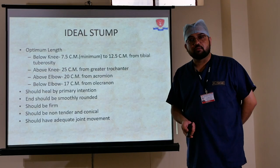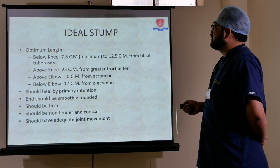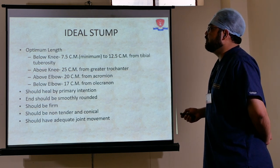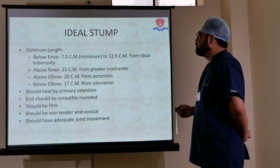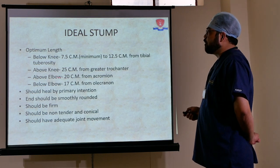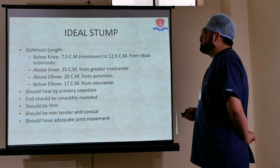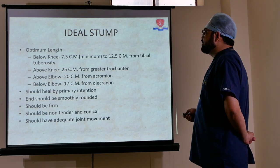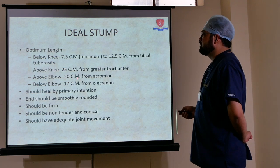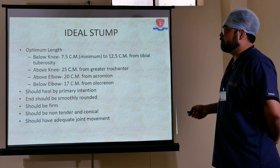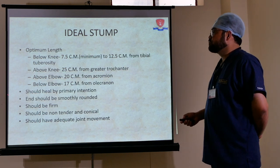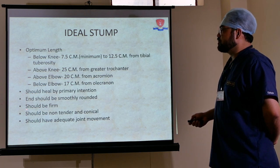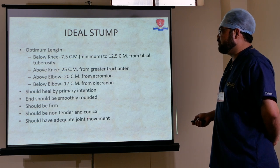The ideal stump criteria: first, the stump should be of optimum length. Below knee: 7.5 cm minimum to 12.5 cm from tibial tuberosity. Above knee: 25 cm from the greater trochanter. Above elbow: 20 cm from the acromion process. Below elbow: 17 cm from the acromion. Second, it should heal by primary intention. Third, it should be smoothly rounded, firm, non-tender, conical, with adequate joint movement.